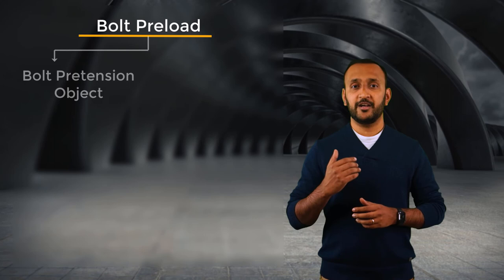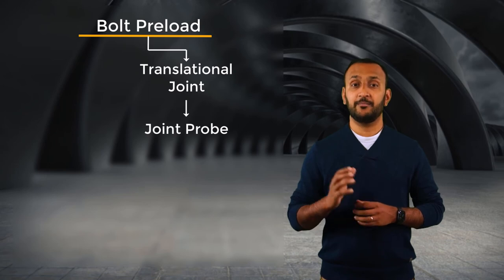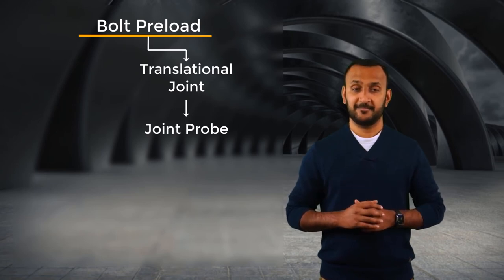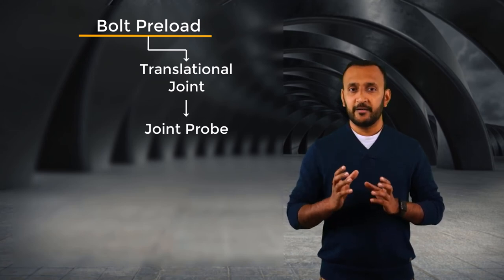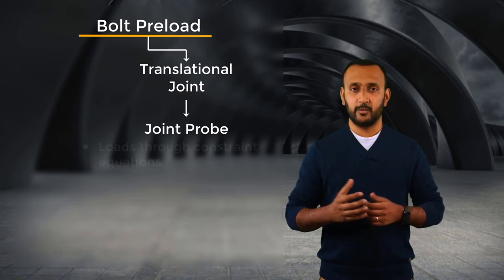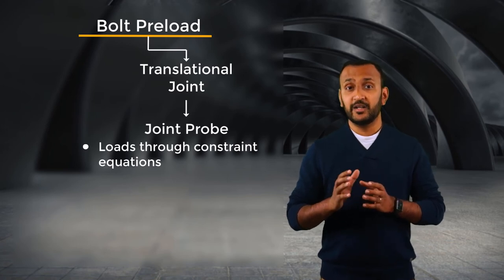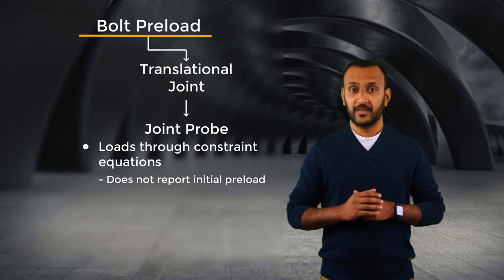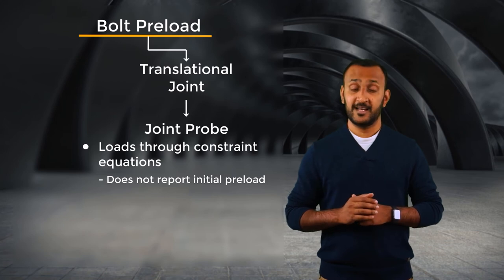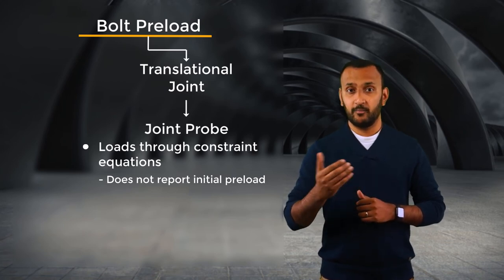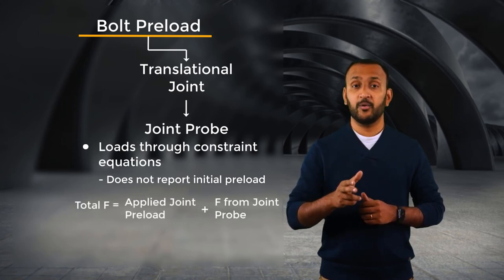If the bolt preload is defined using a translational joint instead of pretension object, then a joint probe can be used for measuring the preload and adjustment. In the details of the joint probe, when we set the result type to total force, it reports the force that are acting through the constraint equations. Note that this value does not include the initial preload that was applied via joint load. It only reports the additional forces that are acting through its section. Therefore, the total preload in the bolt at any given time is the sum of the applied joint load and the total force reported by the joint probe.